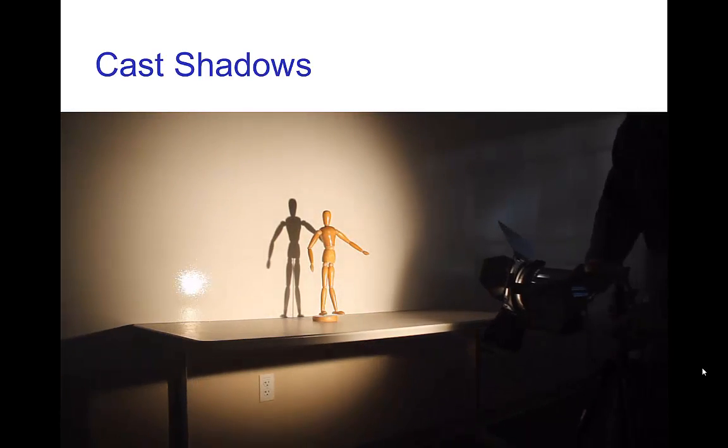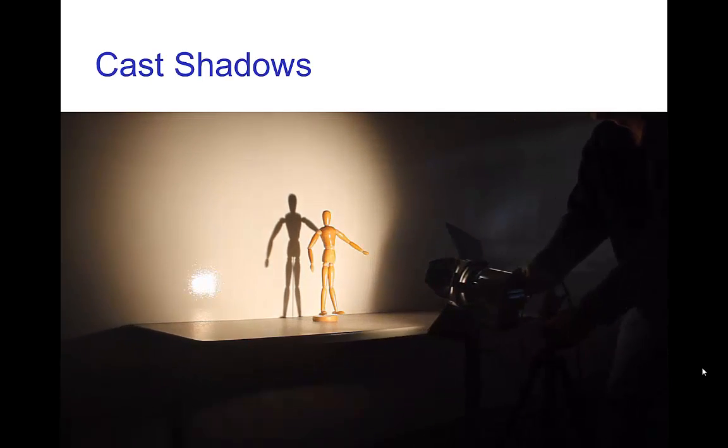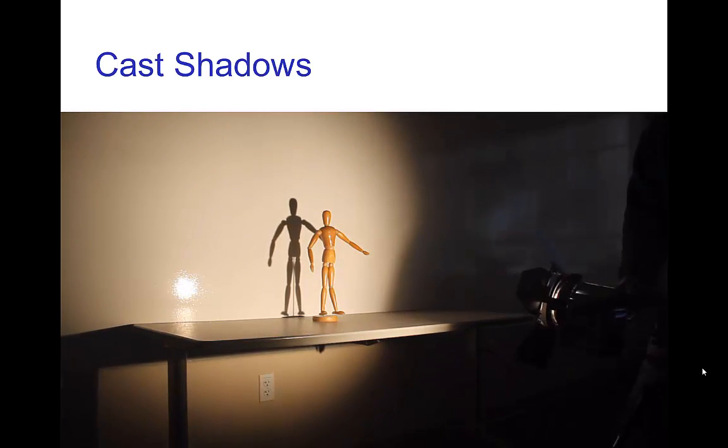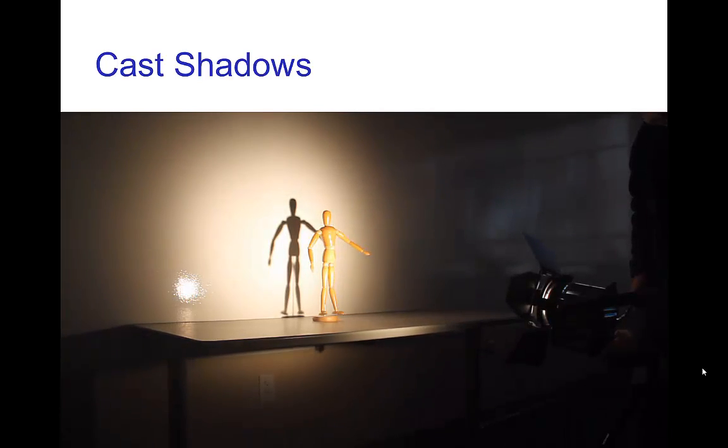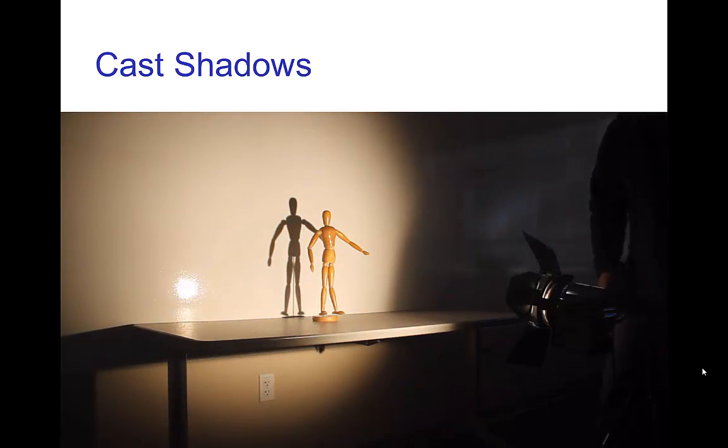Now we can move the position of the light source, and again focusing on the shadow, notice how it is changing just from moving the light source. We can change the type of this light source. It has an adjustable lens, so we can turn a knob and change the focusing, and you see that also affects the shadow.